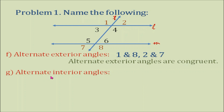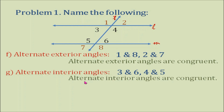How about alternate interior angles? We have 4 interior angles here: angles 3, 4, 5, and 6. The alternate interior angle pairs are angles 3 and 6, and angles 4 and 5. Let's remember that alternate interior angles are congruent.